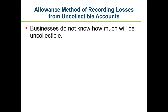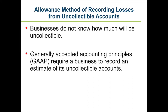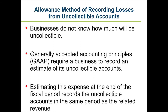It's hard to estimate this amount. Generally Accepted Accounting Principles, GAAP, require a business to record an estimate of its uncollectible accounts. Estimating uncollectible accounts expense at the end of the fiscal period records the expense in the same period as the related revenue. You figure out from past experience what percent of your accounts are not collectible and record this estimated expense every fiscal period.